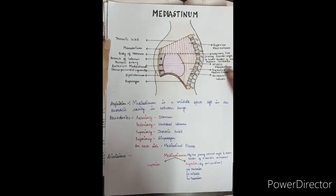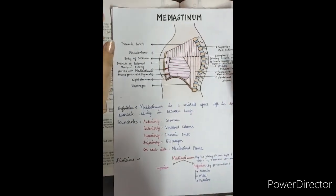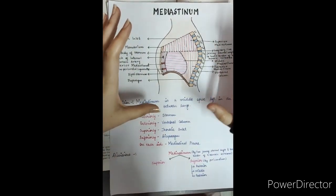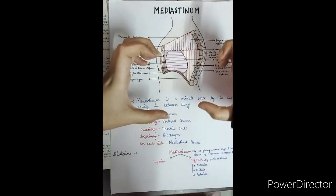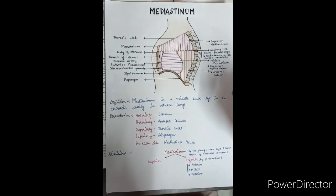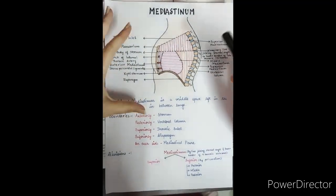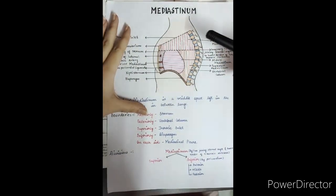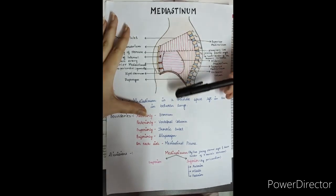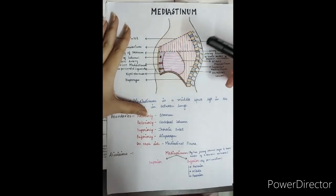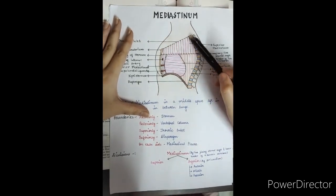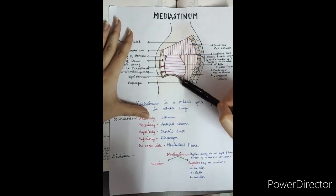Mediastinum. So, mediastinum basically — in a thoracic cavity, we call the mediastinum the space between the two lungs. Now, if we look at this section, this is a side-way longitudinal section. So, mediastinum is this portion.